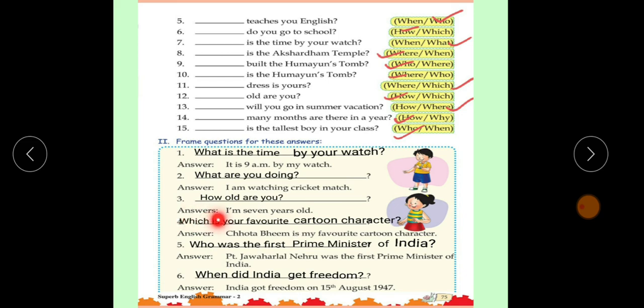Now number 3. I am 7 years old. The question is, how old are you? Aapkitne saal ke hua?